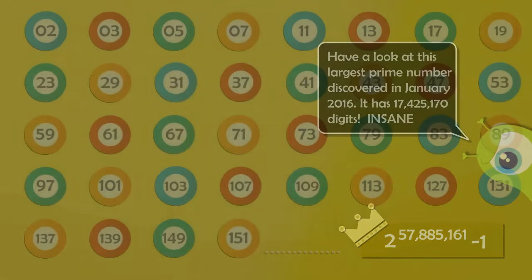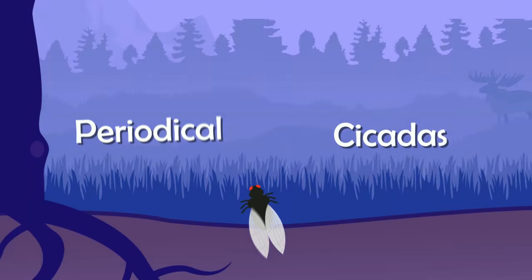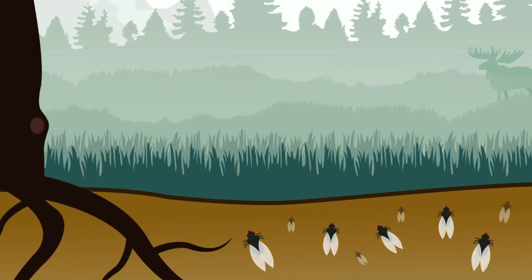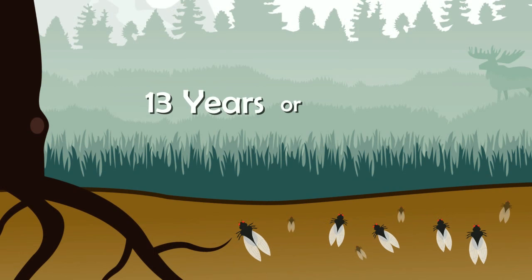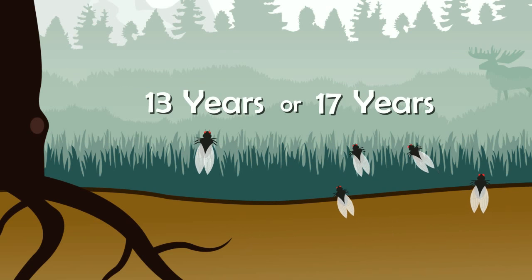Now why are prime numbers important? Well, in animal kingdom, we have this thing called periodic cicadas. They spend most of their life underground feeding on the fluids of the deciduous forest trees. After 13 or 17 years, these cicadas emerge out for mating purpose.